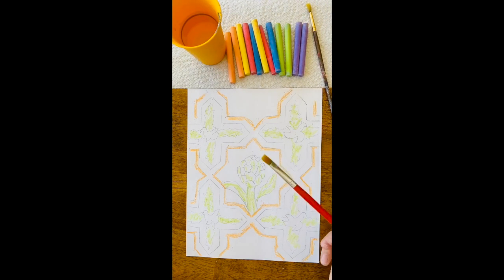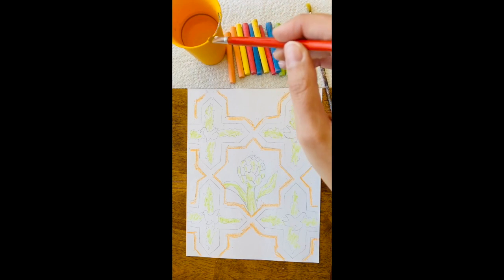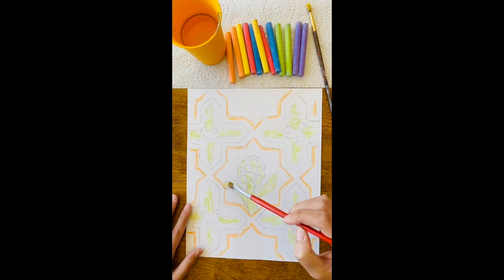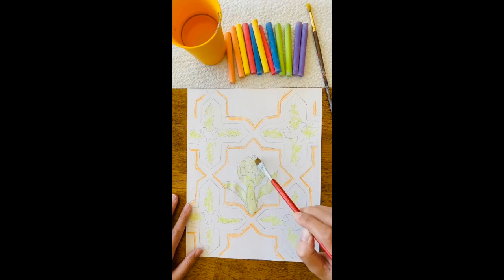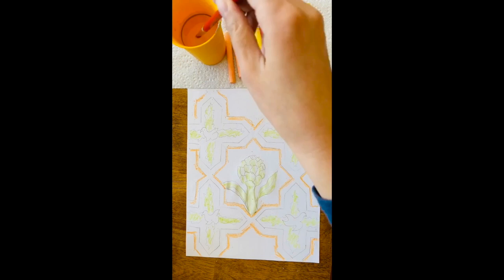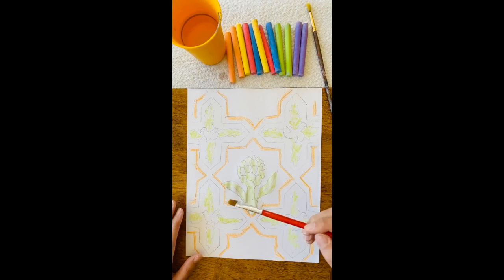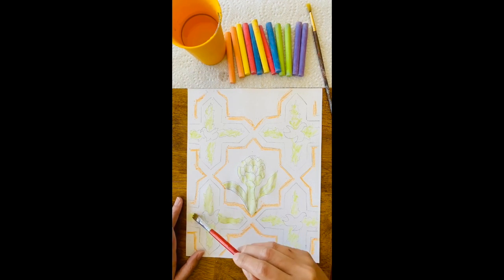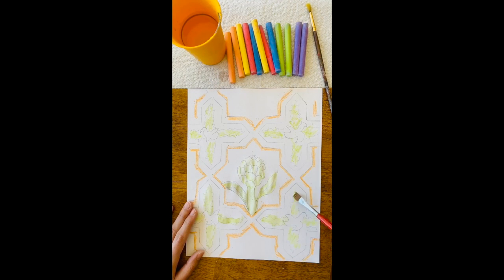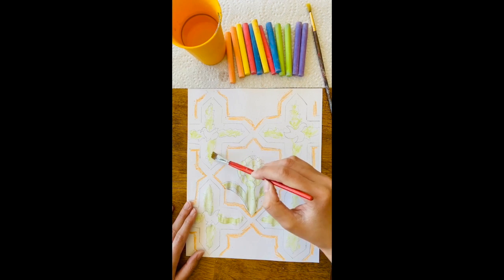Now I'm going to go ahead and grab a paintbrush, get a little water on it, and I'm just going to carefully go in and brush the green sections on this drawing. Now just make sure you're really careful when you're painting with the water because you're going to notice your paper is going to absorb the water and it's going to become very fragile.